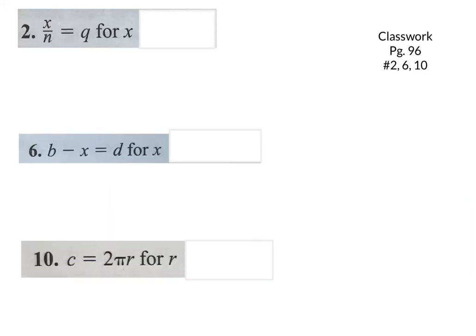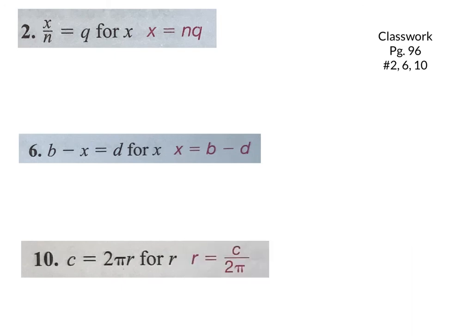Let's check your answers. For the first one, you should have gotten X equals N times Q. For the second one, X equals B minus D, or you could have negative D plus B — I'll show you both ways. And for the last one, you should have gotten R equals C divided by 2π.